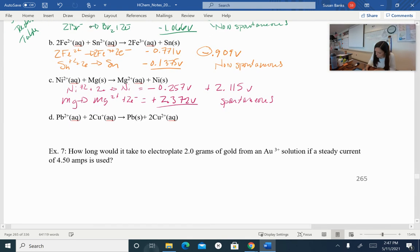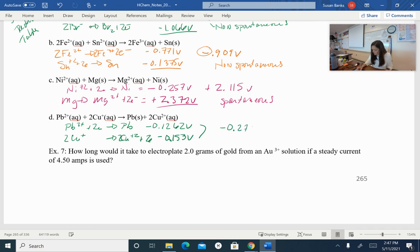Last but not least for this type of problem. We've got lead plus two, plus two electrons going to lead solid. And I get a voltage of negative 0.1262 volts on that. And then if I have copper plus one, going to copper plus two, and I'm going to need to do two of those plus two electrons, I get a voltage of negative 0.153 volts. So when I add those together, I get a negative 0.279 volts. So that is non-spontaneous. So I would need a power source to push those electrons in that direction, because it's not going to happen spontaneously.